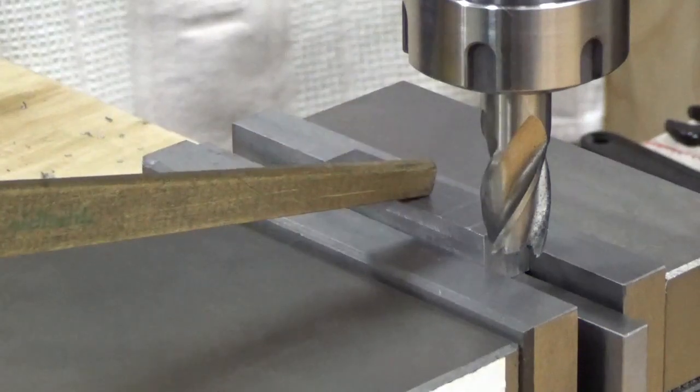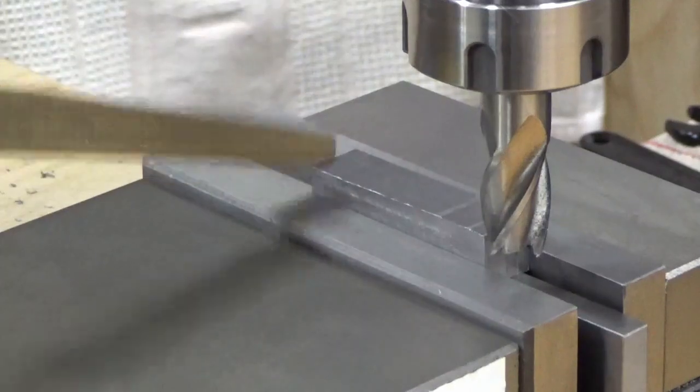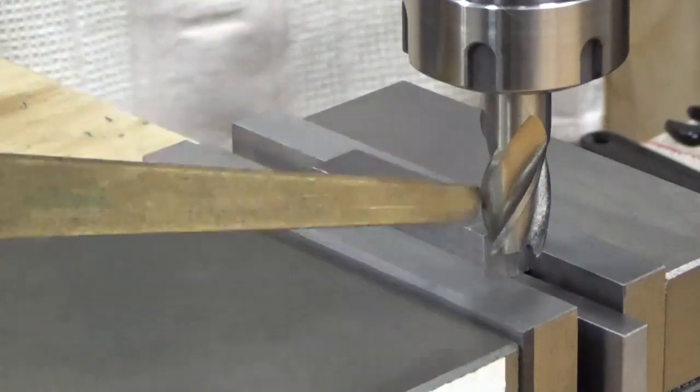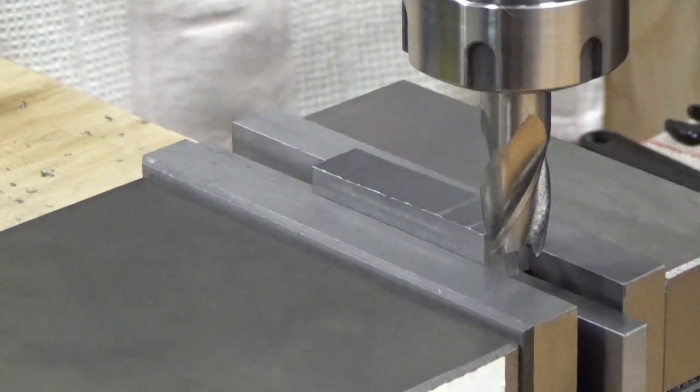So we're up to the fourth side now. What we're going to do here is bring that down to 12mm total thickness. So we're just going to take a number of cuts through and get that down to size, and that'll finish off all four sides.